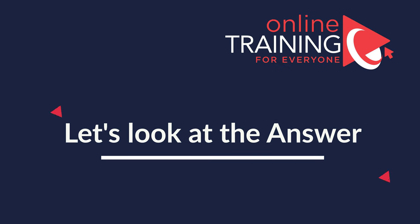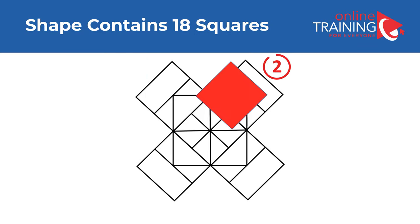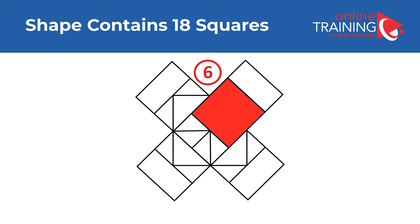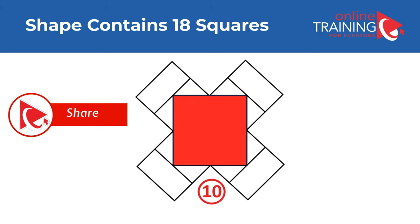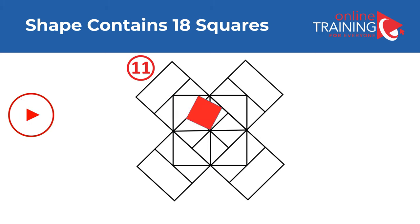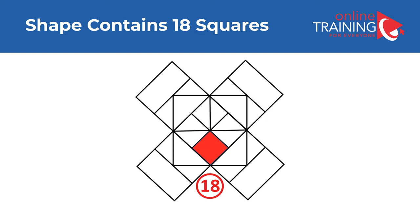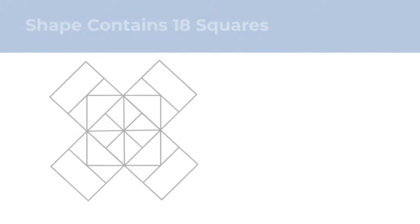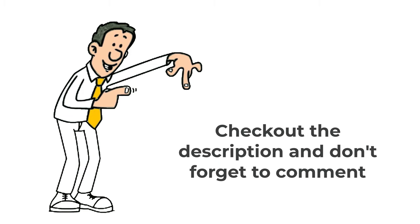Believe it or not, I counted 18 squares in this shape. Let me share them all with you: one, two, three, four, five, six, seven, eight, nine, ten, eleven, twelve, thirteen, fourteen, fifteen, sixteen, seventeen, and eighteen. I hope I found all of them — do you see any additional ones? Please share them in comments. If you're looking for additional practice questions, check out the description for the link to the ebook.